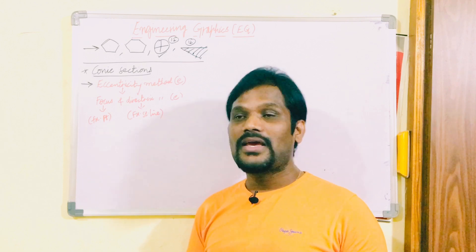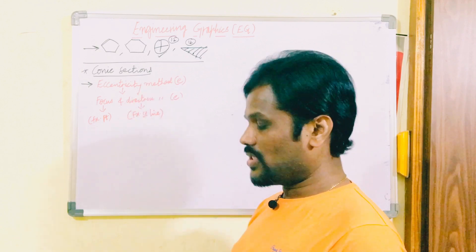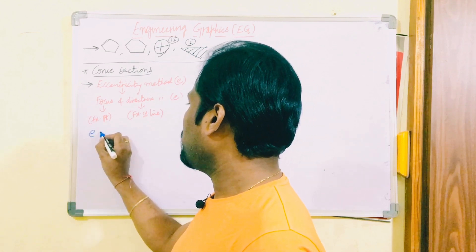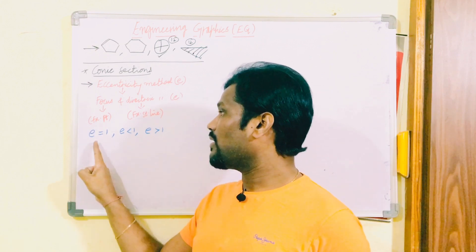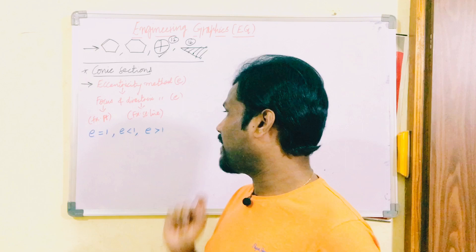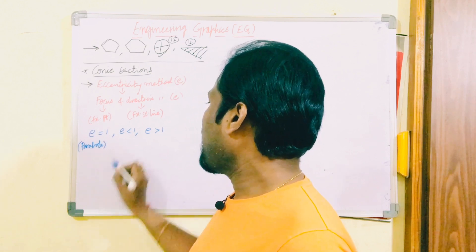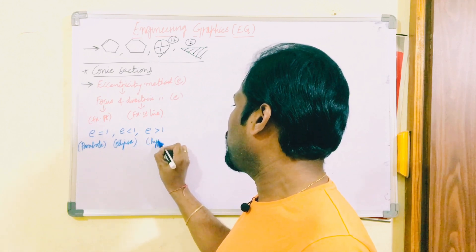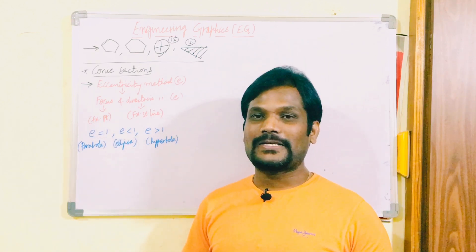Keep in mind these three parameters so you can understand and recognize the question while reading. The three key values are: e equals 1, e less than 1, and e greater than 1. In the question paper they won't state these directly, but e equals 1 means parabola, e less than 1 means ellipse, and e greater than 1 means hyperbola — all to be constructed using the eccentricity method.